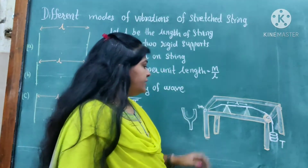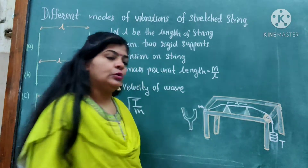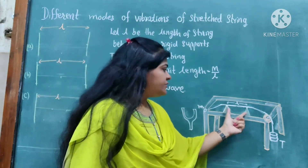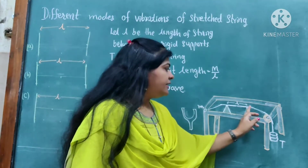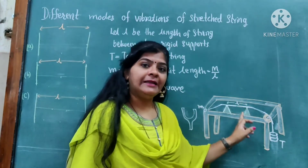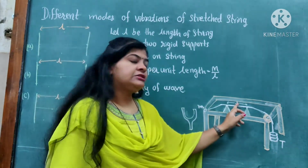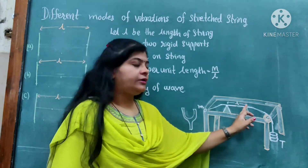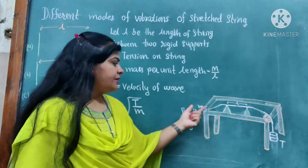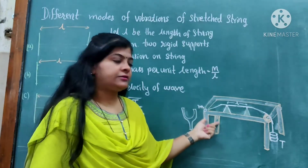Now after that, if you see that there are two knife edges used. And in between the knife edges, whatever the length of the wire is there, that is called as a vibrating length. And this vibrating length is denoted by small l.